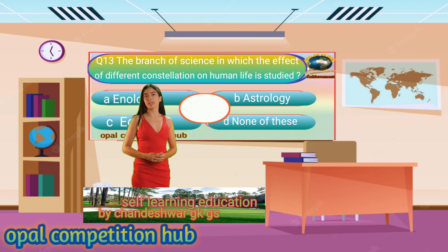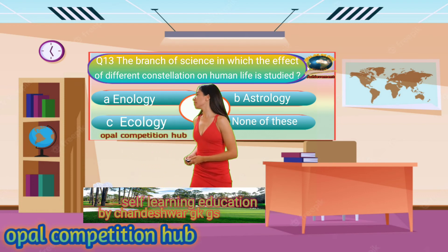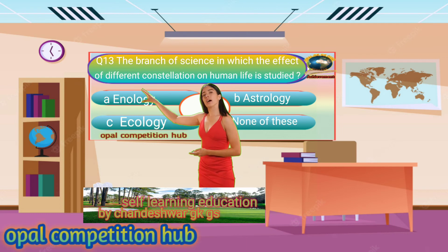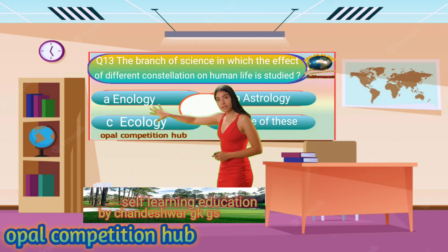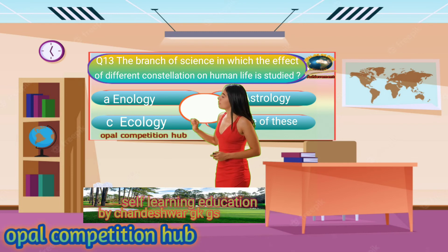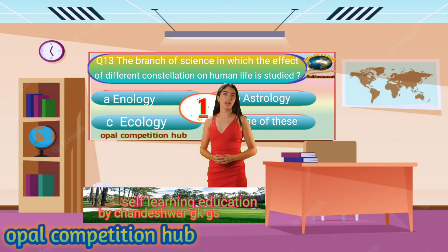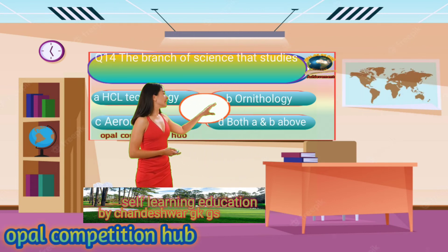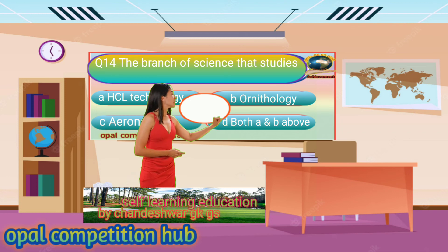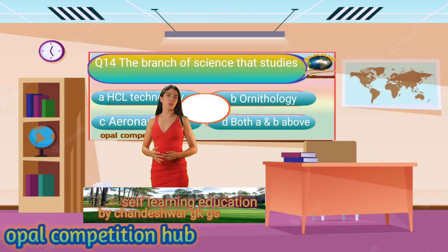Question number 13. The branch of science in which the effect of different constellations on human life is studied. Your options are: Option A. Enology, Option B. Astrology, Option C. Ecology, Option D. None of these. Your time starts now. Your answer will be Option B. Astrology.